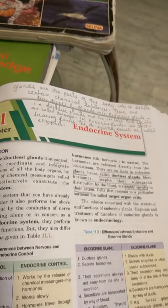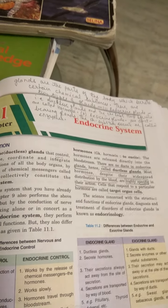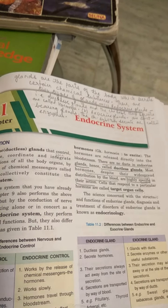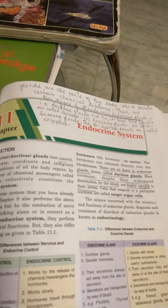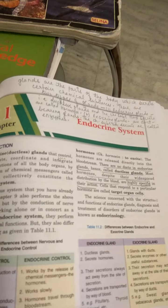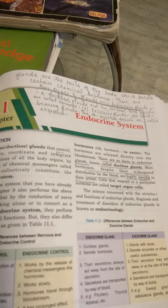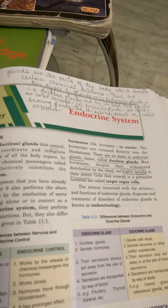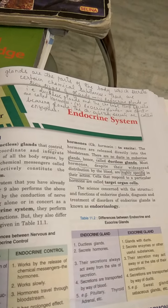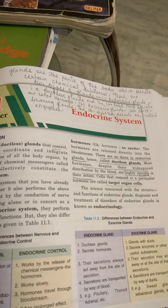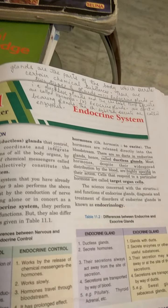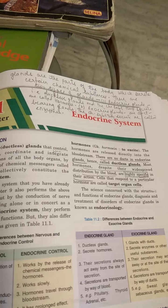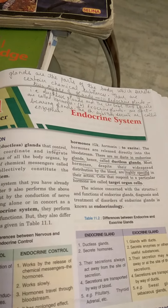There are parts in our body which secrete certain chemical substances, and these parts are called glands. There are two types of glands in our body: the endocrine glands and the exocrine glands. The endocrine glands are called ductless glands.